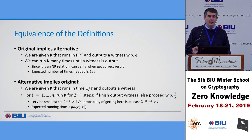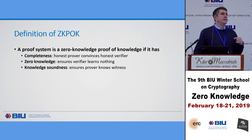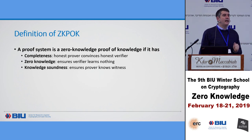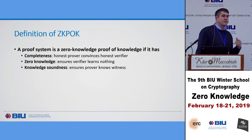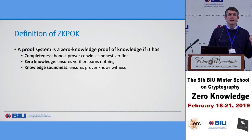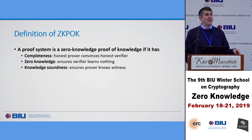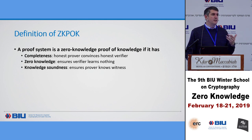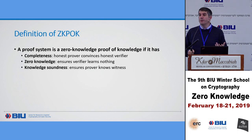So we have two equivalent definitions of knowledge soundness, and from these we get a zero knowledge proof of knowledge — a ZK-PoK. It has the three properties of zero knowledge but we add knowledge soundness instead of standard soundness. Completeness: the honest prover convinces the honest verifier. Zero knowledge: the verifier learns nothing from the interaction. Knowledge soundness: the prover knows the witness. For proving identity — I have a public key and want to prove I know the private key — we need completeness for honest parties to authenticate, zero knowledge so I don't leak my private key, and knowledge soundness to prevent someone from proving without actually knowing the private key.